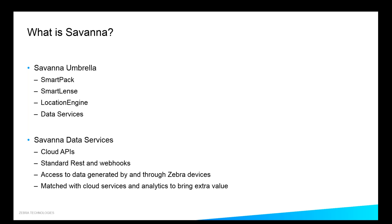So what is Savannah? Savannah is a big term that Zebra uses for a lot of different things. We have a lot of different products that we call Savannah or 'powered by Savannah' — these are a lot of our cloud services, cross-Zebra services, and different tool sets as well as solutions. If you've looked at the Zebra website, you might see things like Smart Pack, Smart Lens, the Location Engine, as well as the Data Services. What we've launched more recently is the data services aspect.